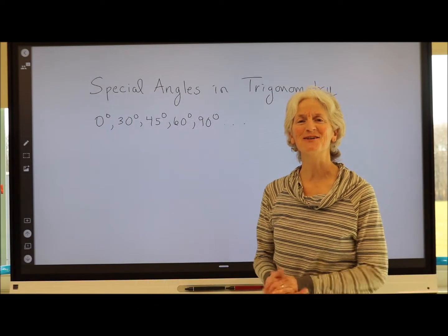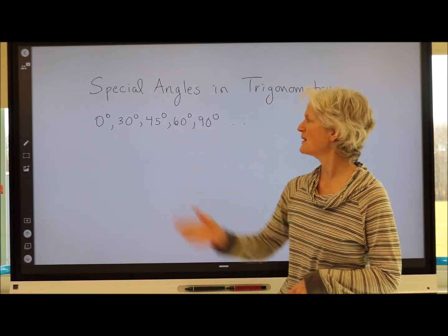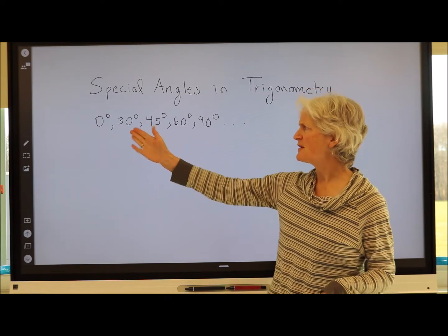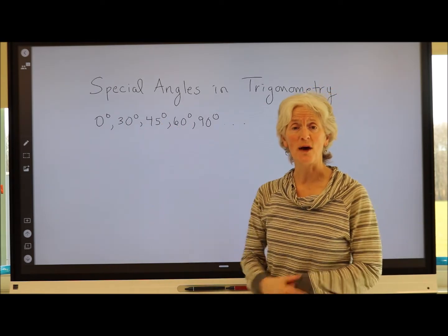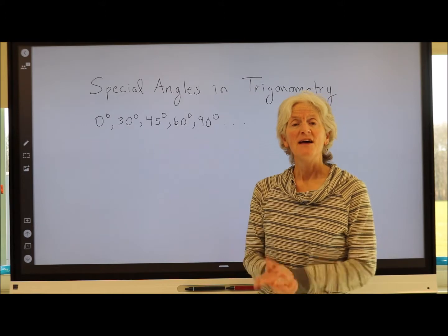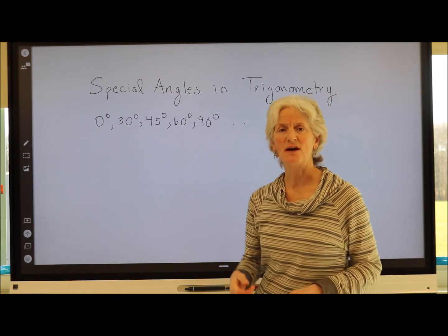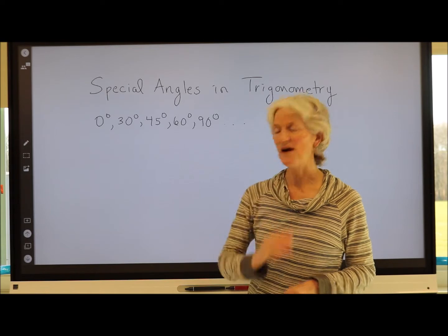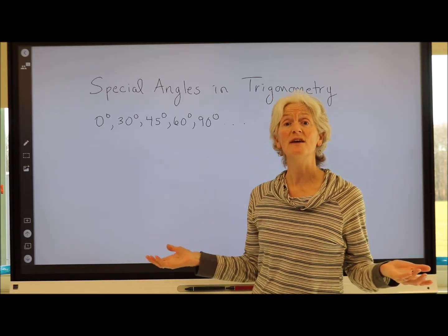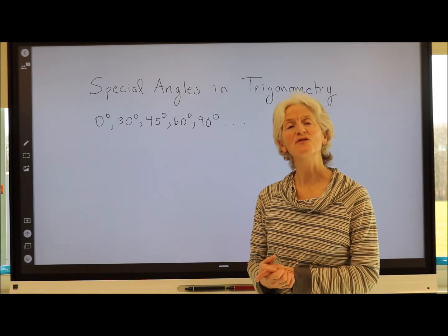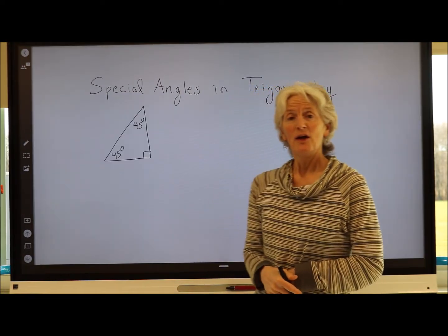In trigonometry, we spend a lot of time with some special angles: 0°, 30°, 45°, 60°, 90°, and so on. Today we're going to talk about two special triangles — 30-60-90 triangles and 45-45-90 triangles — and how those can be useful in helping us find trig ratios.